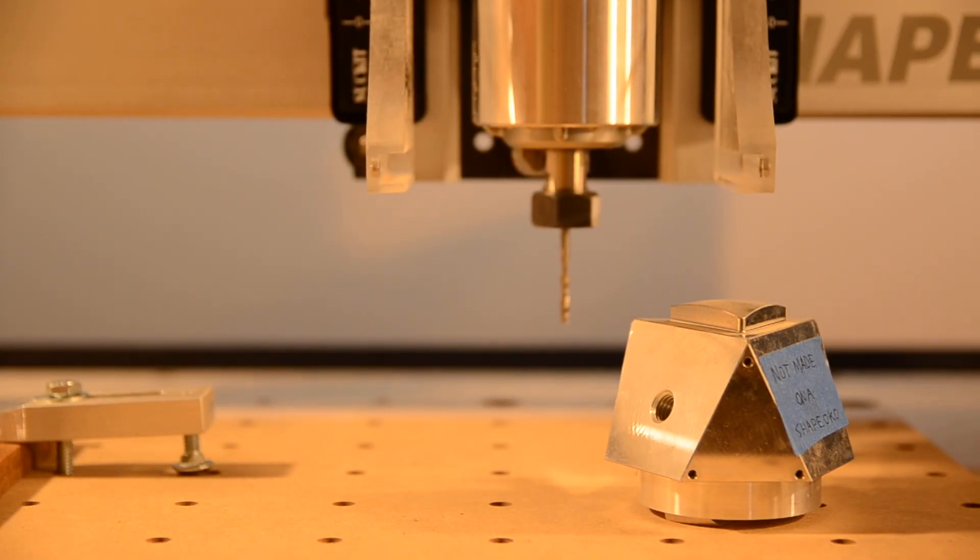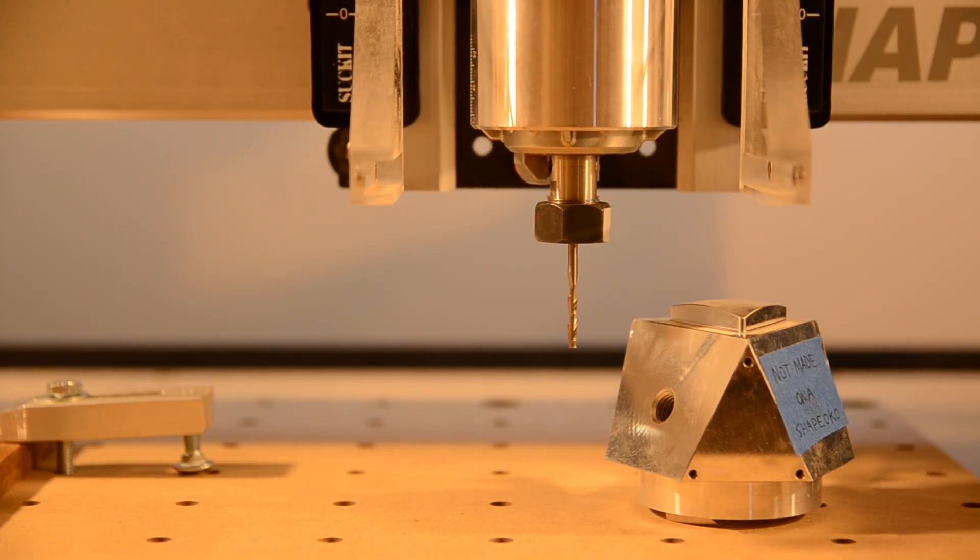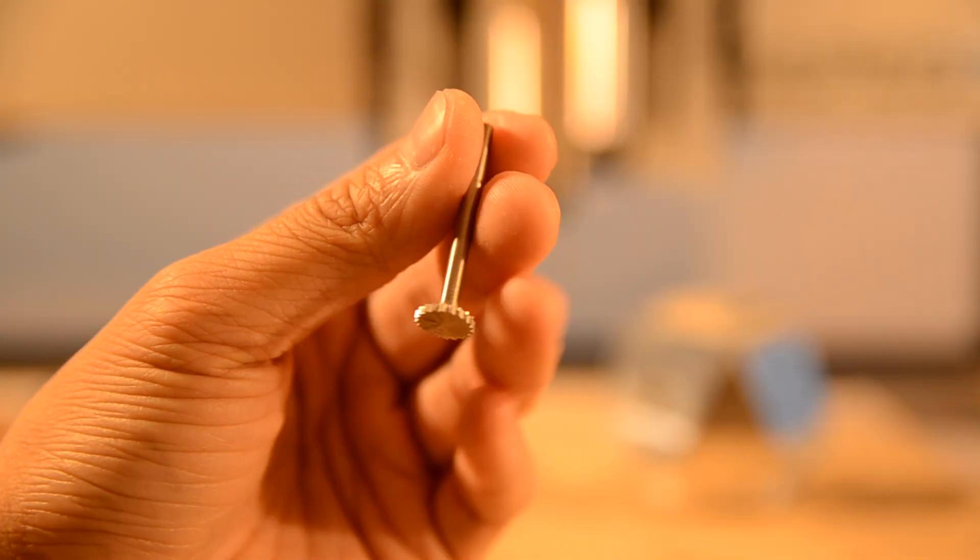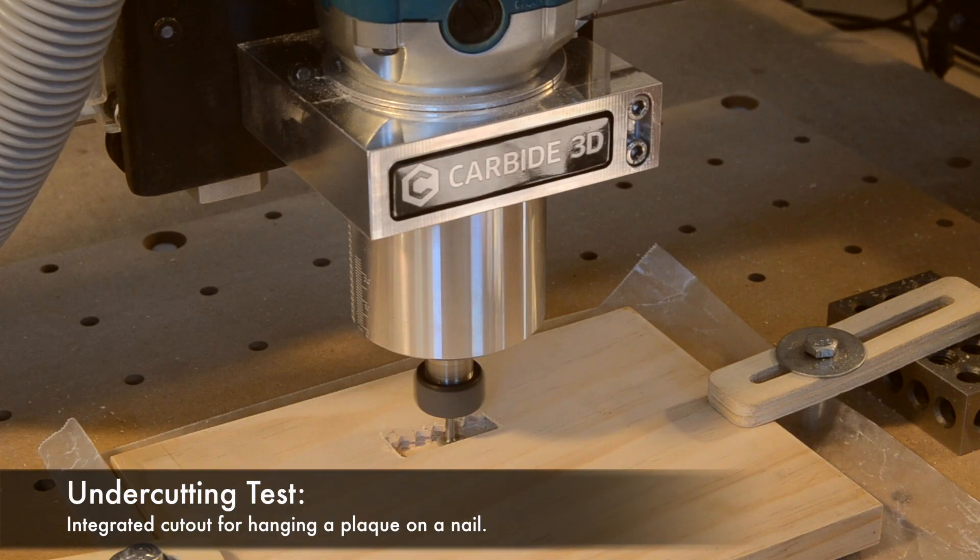Because of the way CNCs move, the cutter can't reach underneath overhangs. This is an inherent limitation of three-axis machines, although you can sometimes work around this by flipping parts over or using special tools.